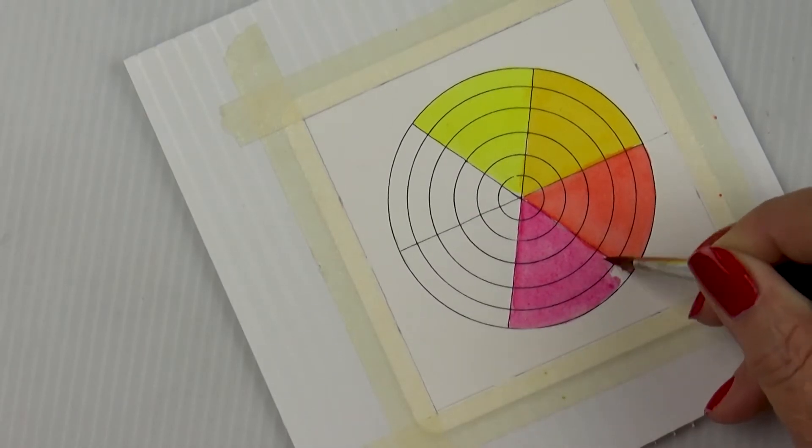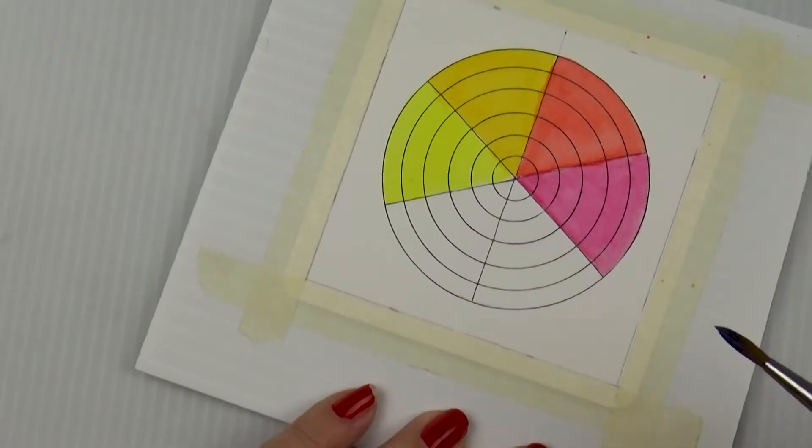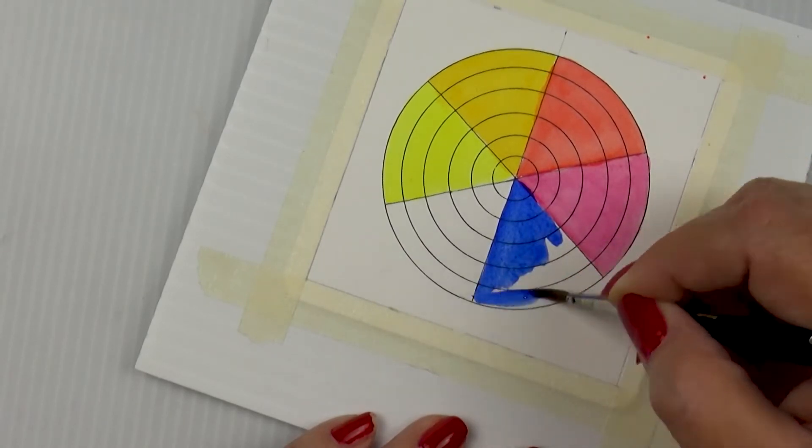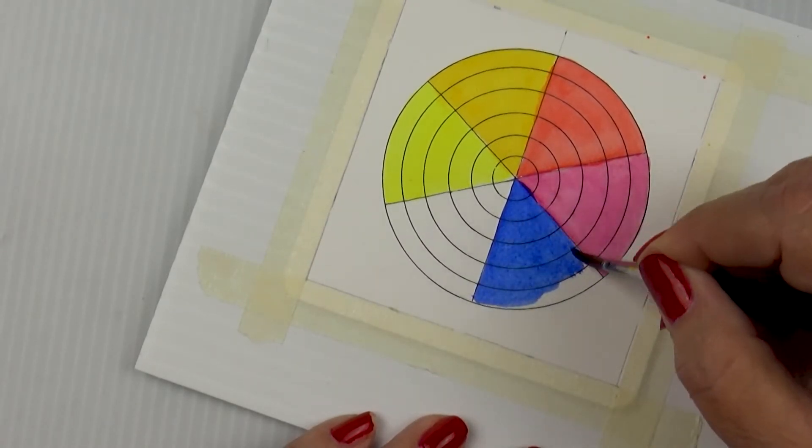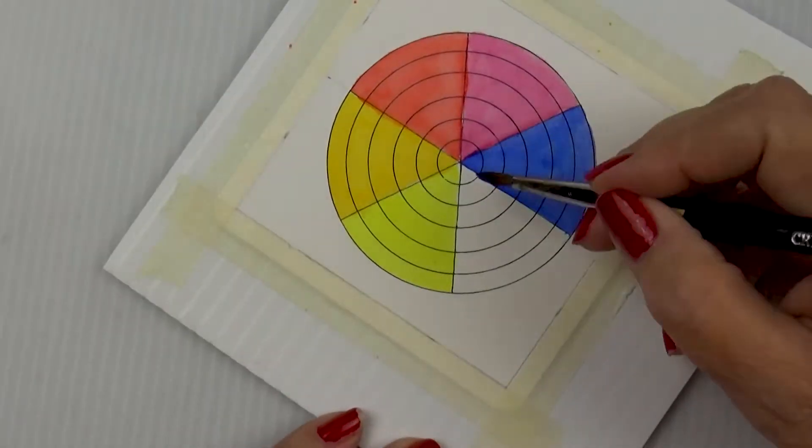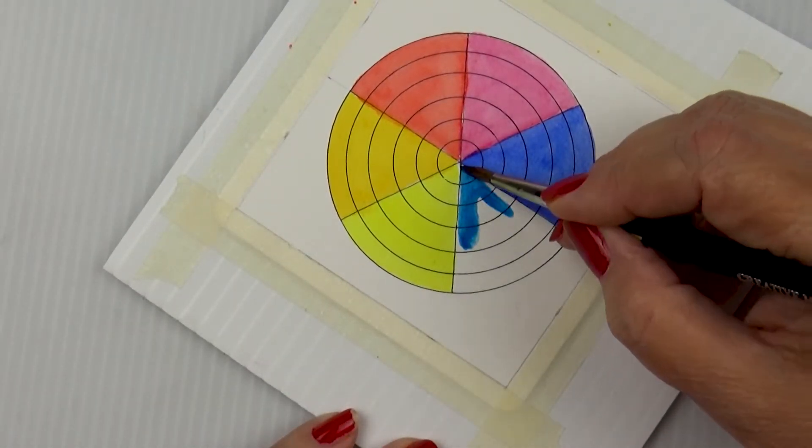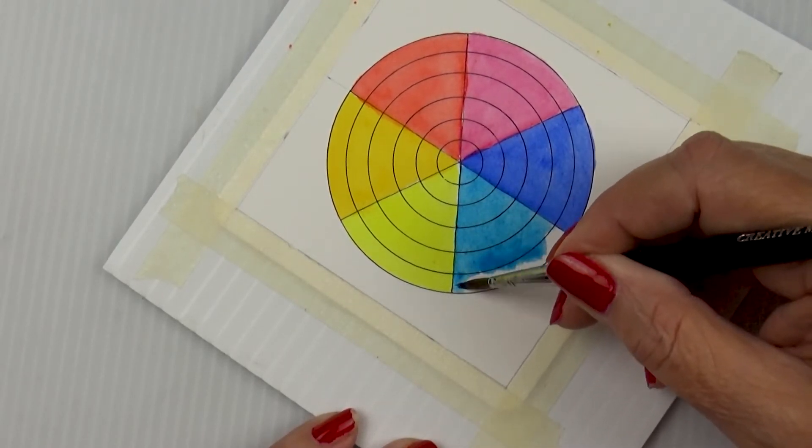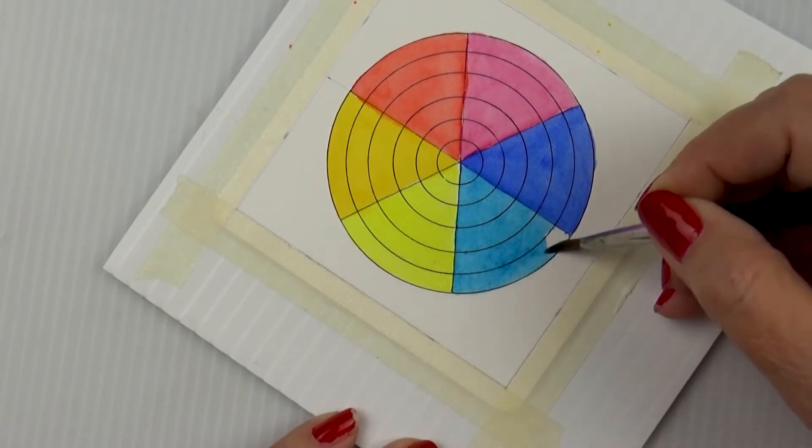In each piece of pie, I painted each one of the colors from the set. I painted them in the order from a rainbow. I started with Hansa Yellow Light, went to New Gamboge, then Pyrrole Scarlet and Quinacridone Rose, then French Ultramarine, and finally Phthalo Blue.